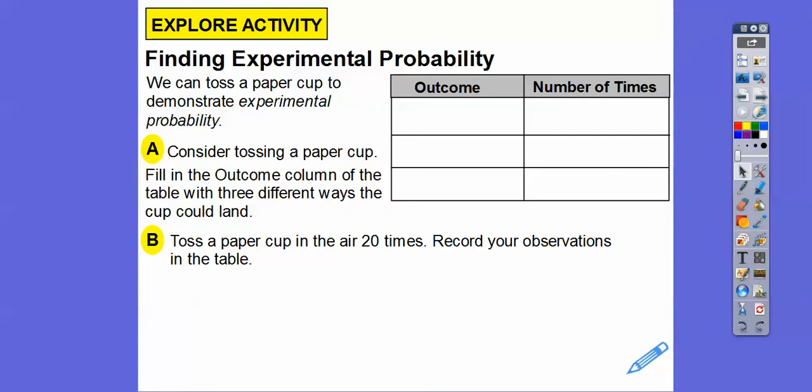We can toss a paper cup - think of a styrofoam cup or a paper cup that truncates smaller at the bottom and gets bigger at the top. Consider tossing this paper cup and fill the outcome columns of the table with the three different ways a cup could land. We're going to toss the cup in the air 20 times and record our observations. To save time in this video, I'm going to use what I did earlier and record these.